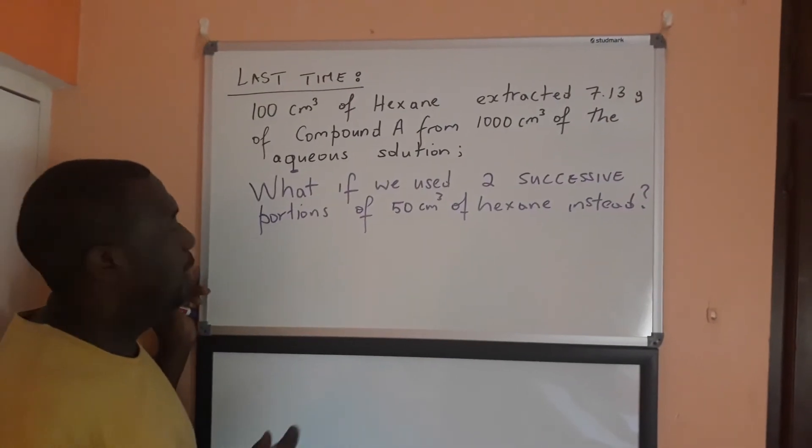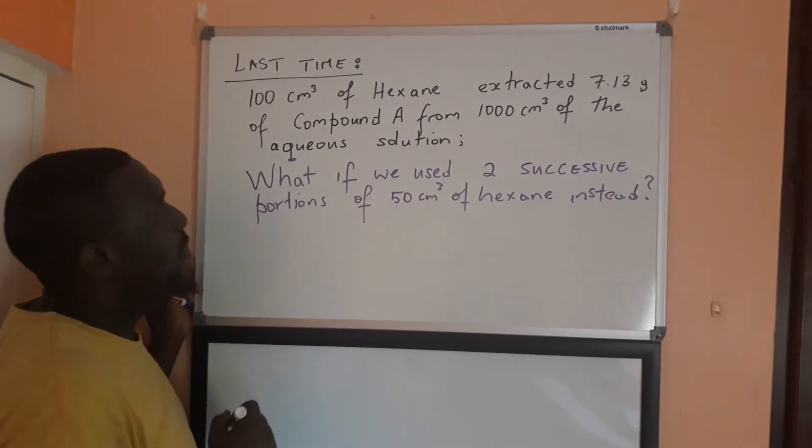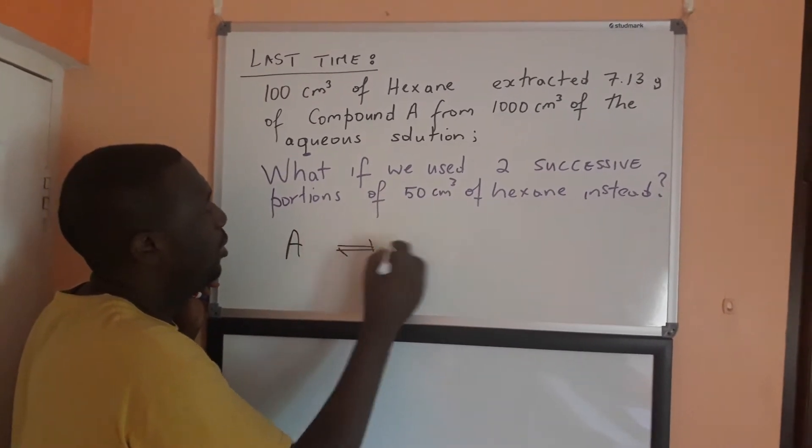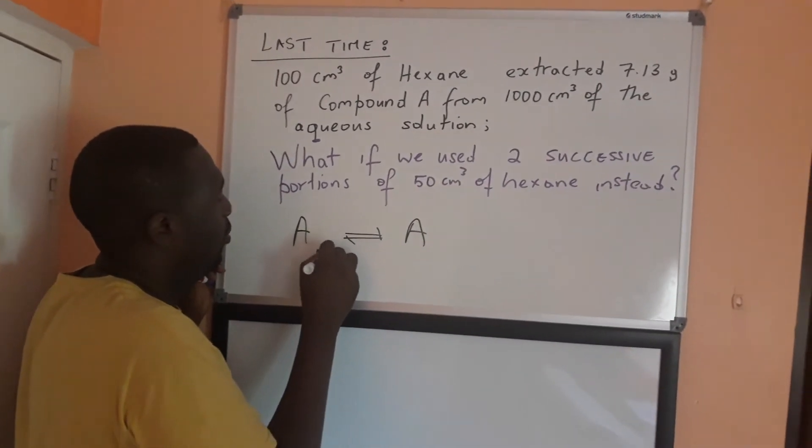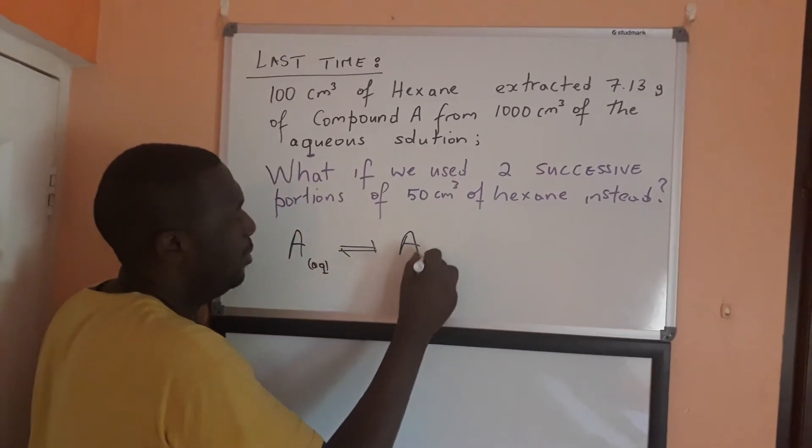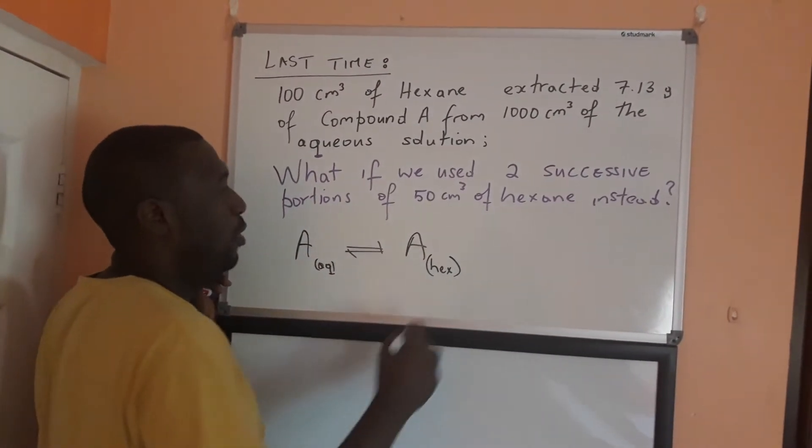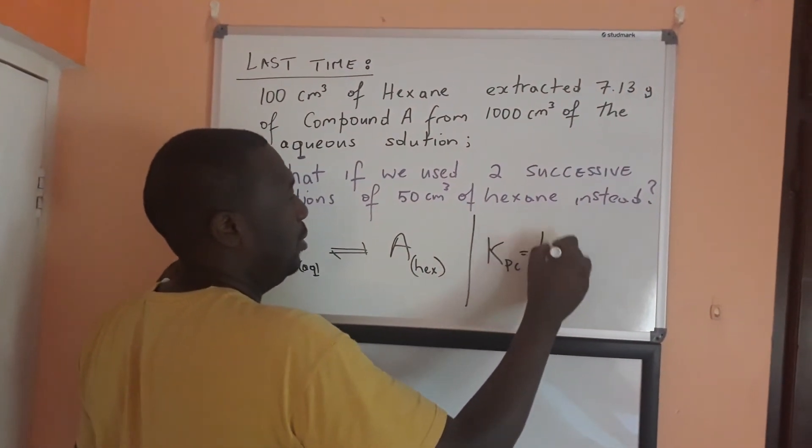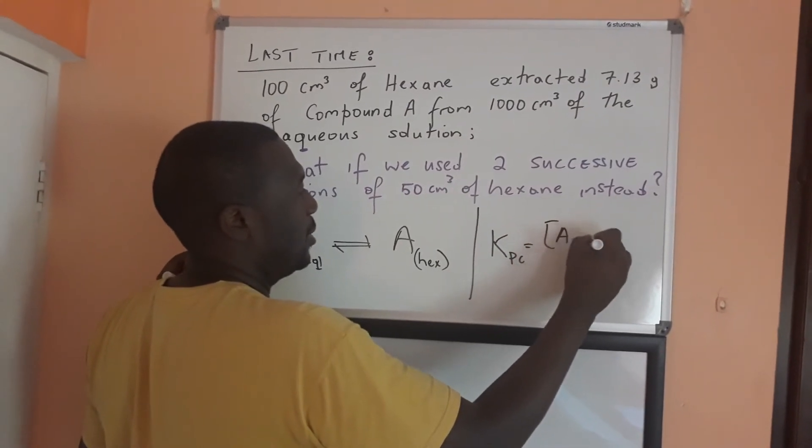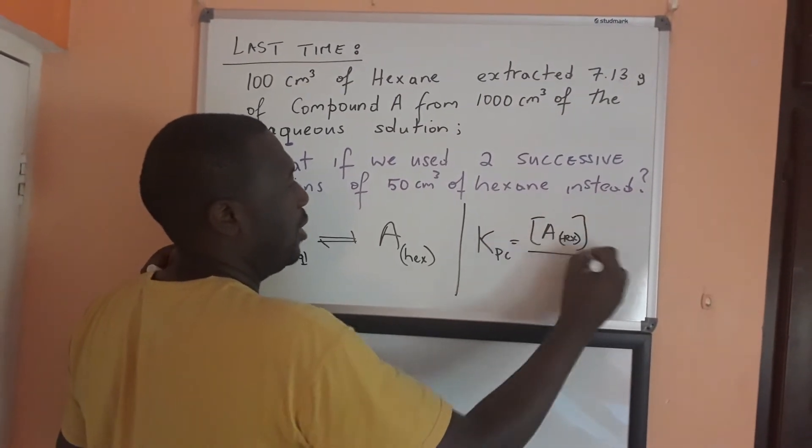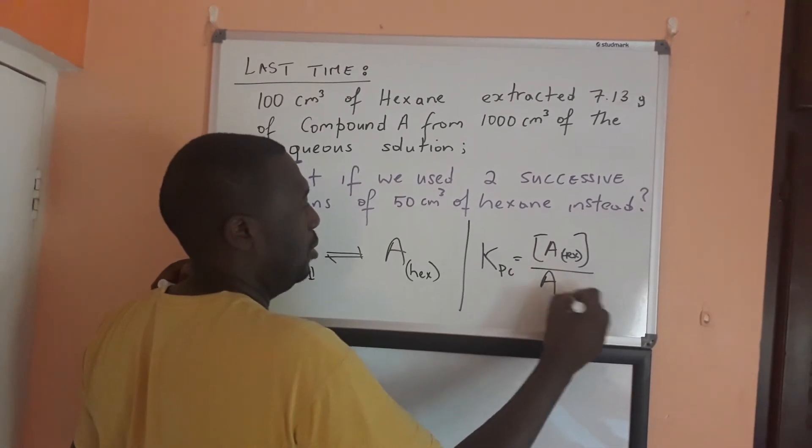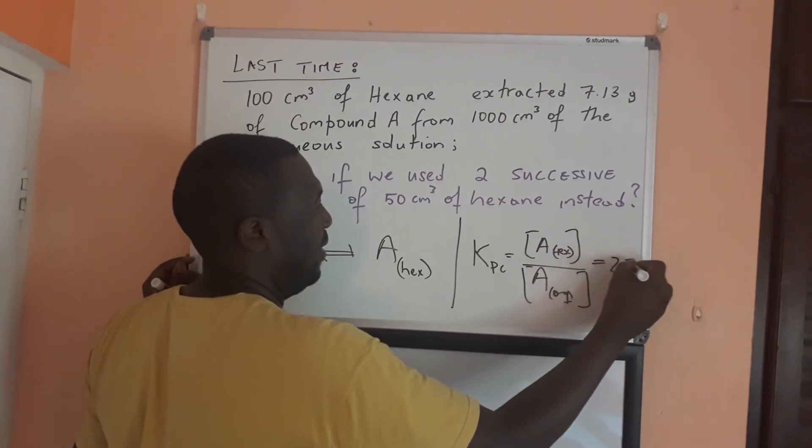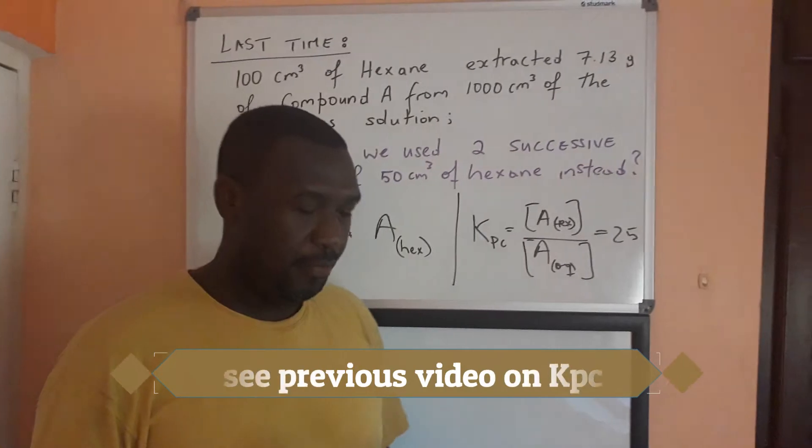Now, let's recall that the equilibrium that we have here is compound A distributed across water and hexane. So, last time we determined KPC for that, the concentration of A in hex over the concentration of A in water, we determined that that value was 25. That's where we ended.